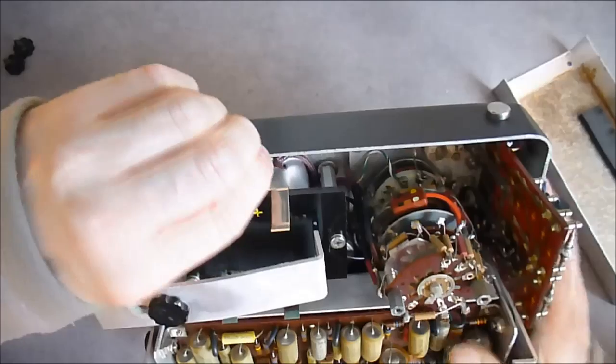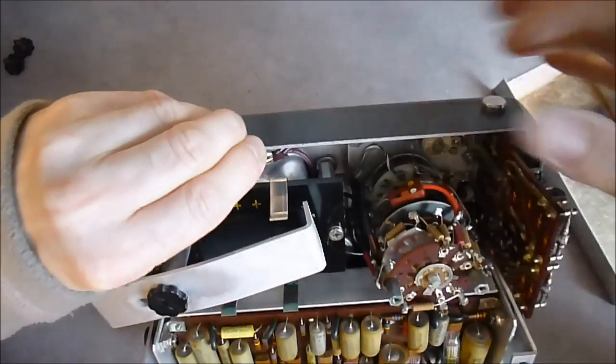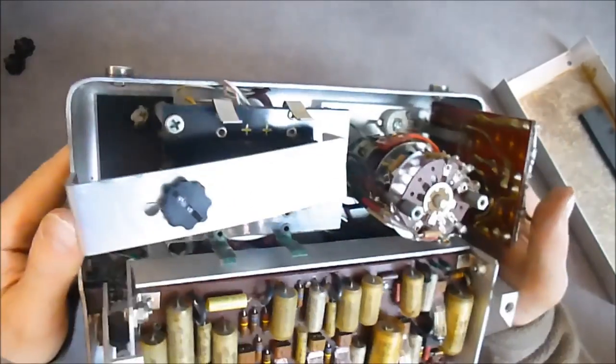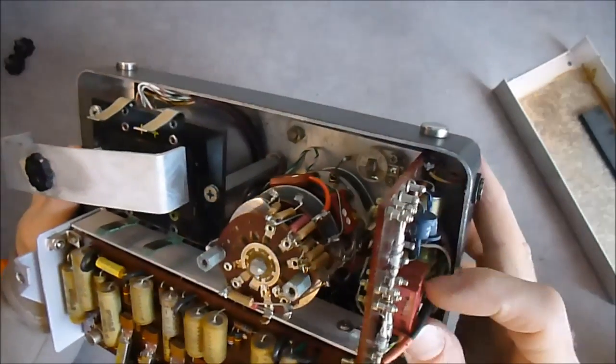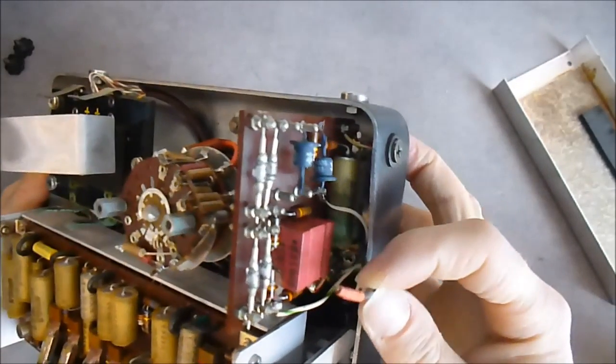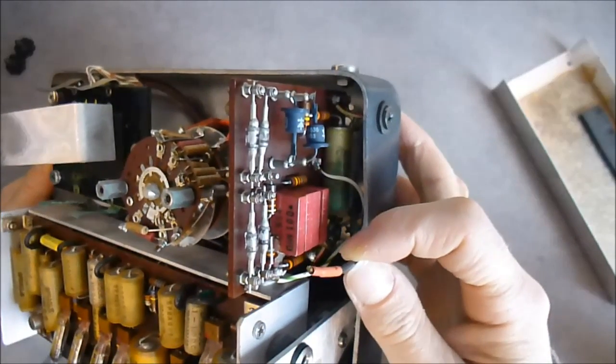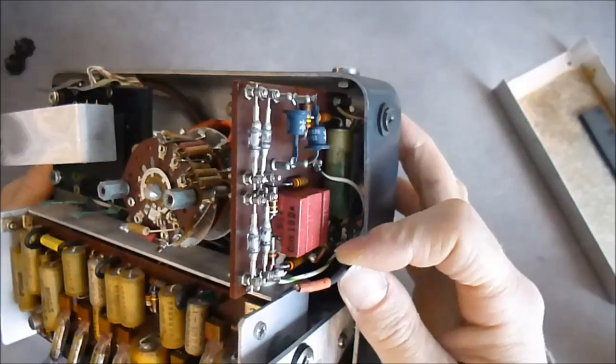So here it is interesting. You can see this cloth material around the wires. I have exactly the same one on an aircraft instrument. Oh, there is a loose wire here. Maybe it is my problem. Maybe it is why it is not working.